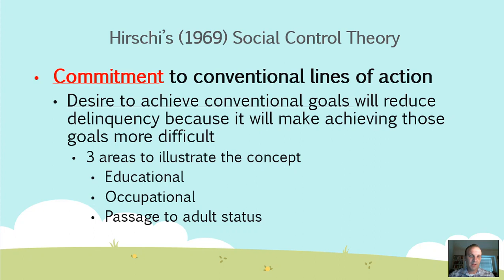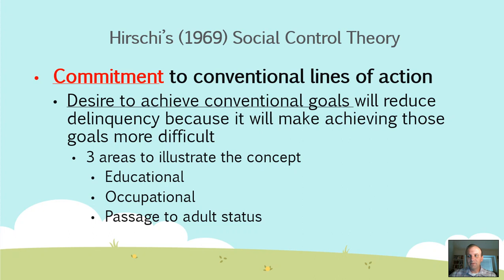Occupational commitment: if you have a good job, you want to keep it, so you're not going to rob a bank or get caught up in a felony or a bar fight because you don't want to lose your job — you want to get promoted and get the management position. The third domain is passage to adult status. The theory accounts for youth who gain adult status earlier than others — if you have a child at 17 or 18, that's a passage to adult status that deters crime because you have a commitment and responsibility.